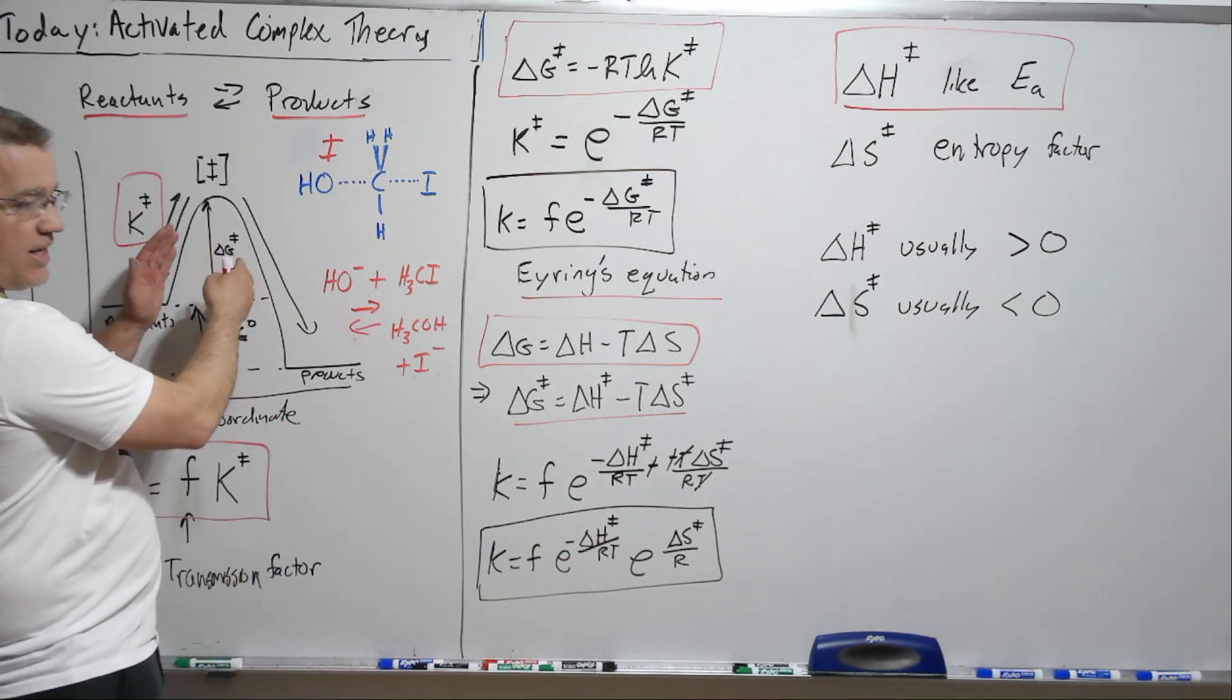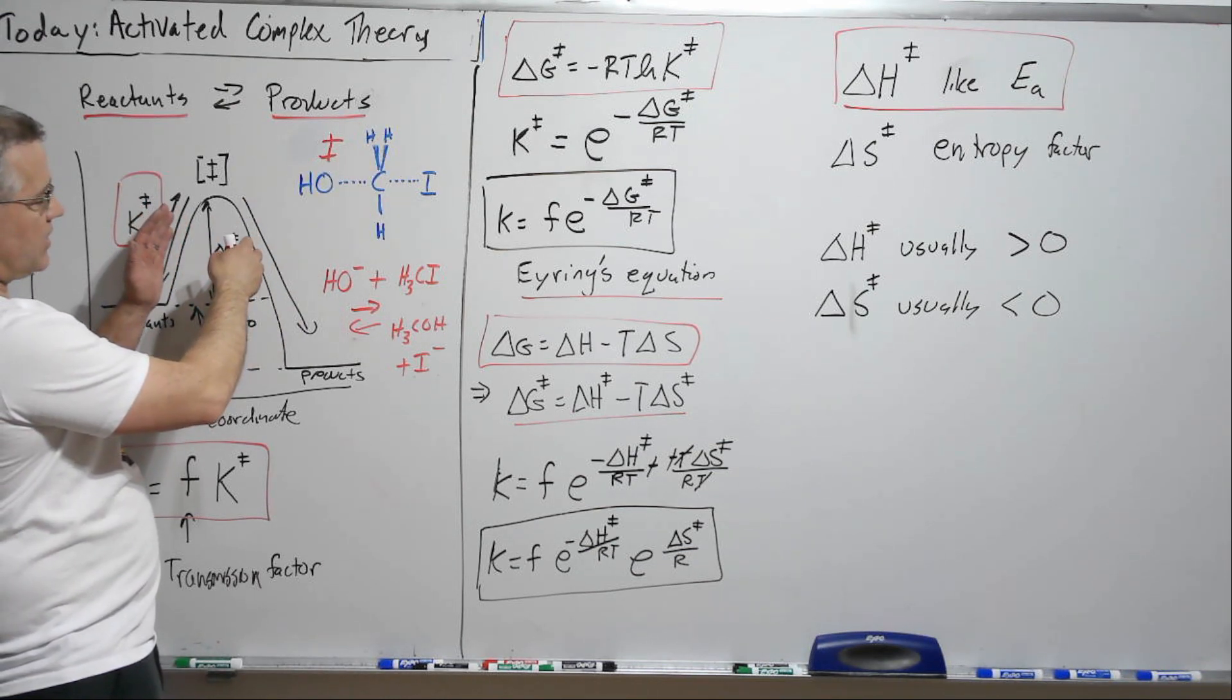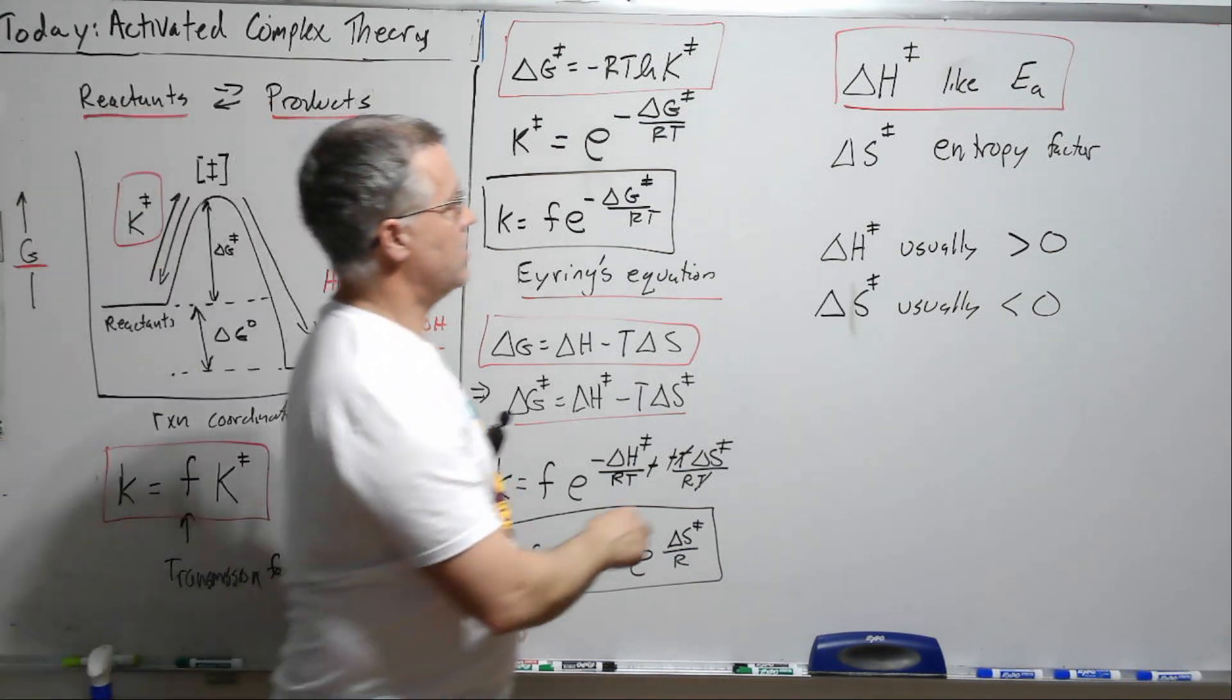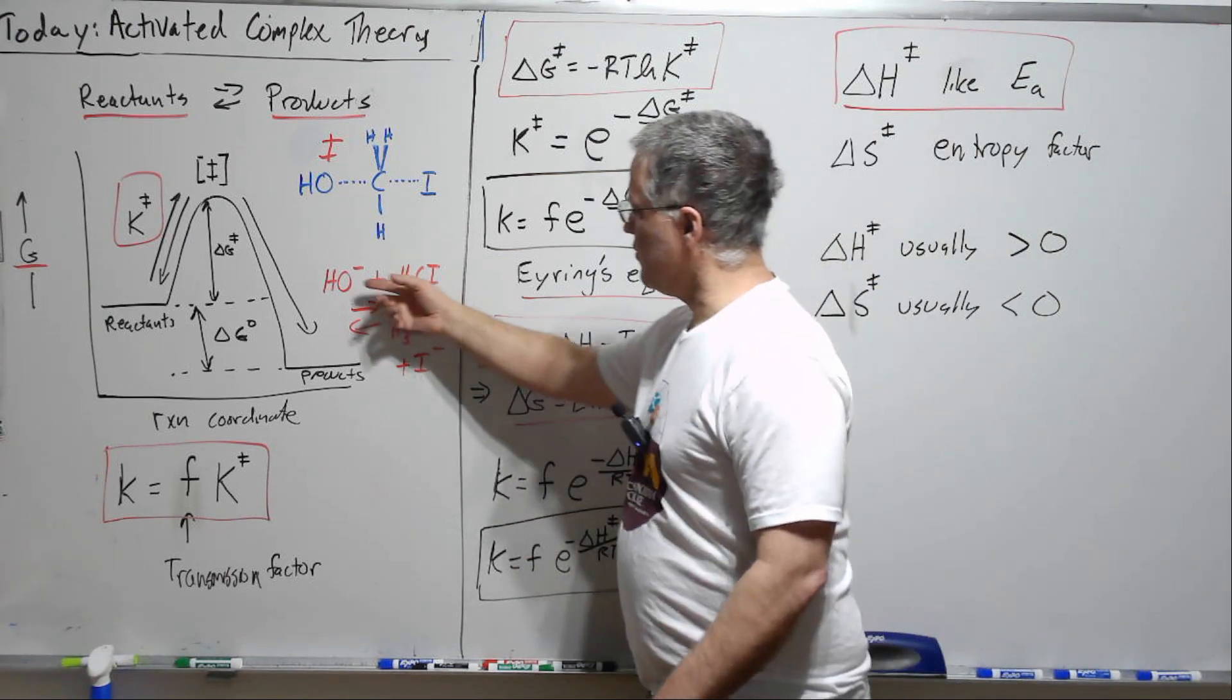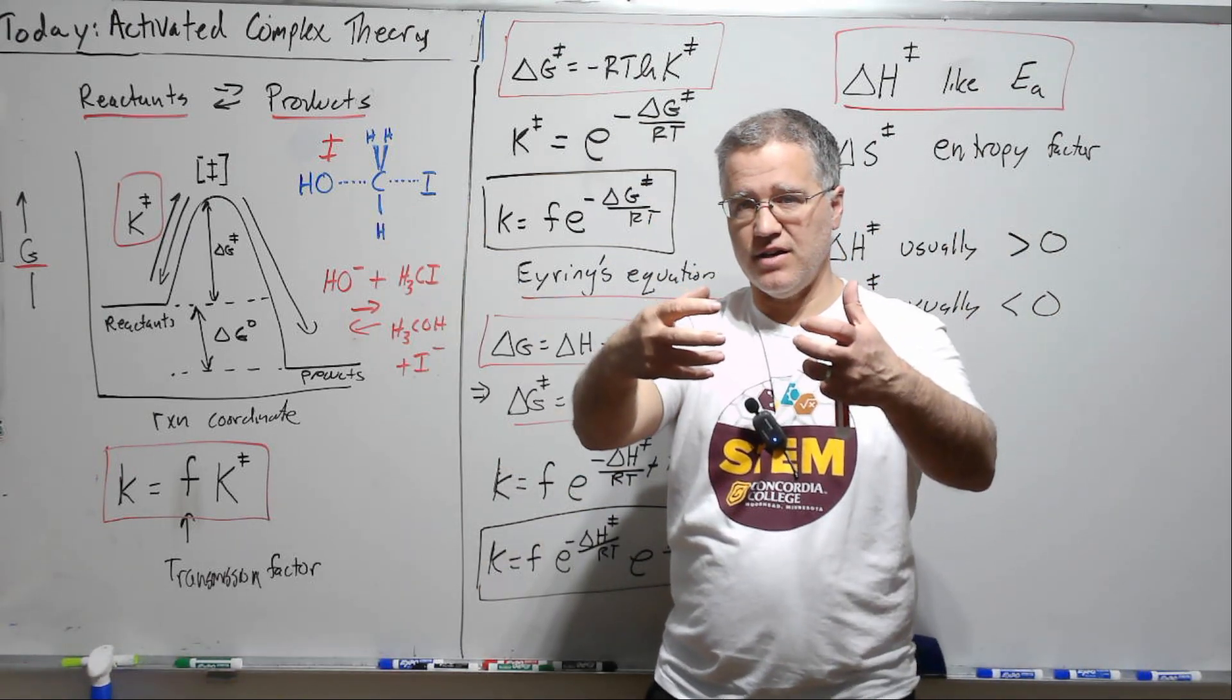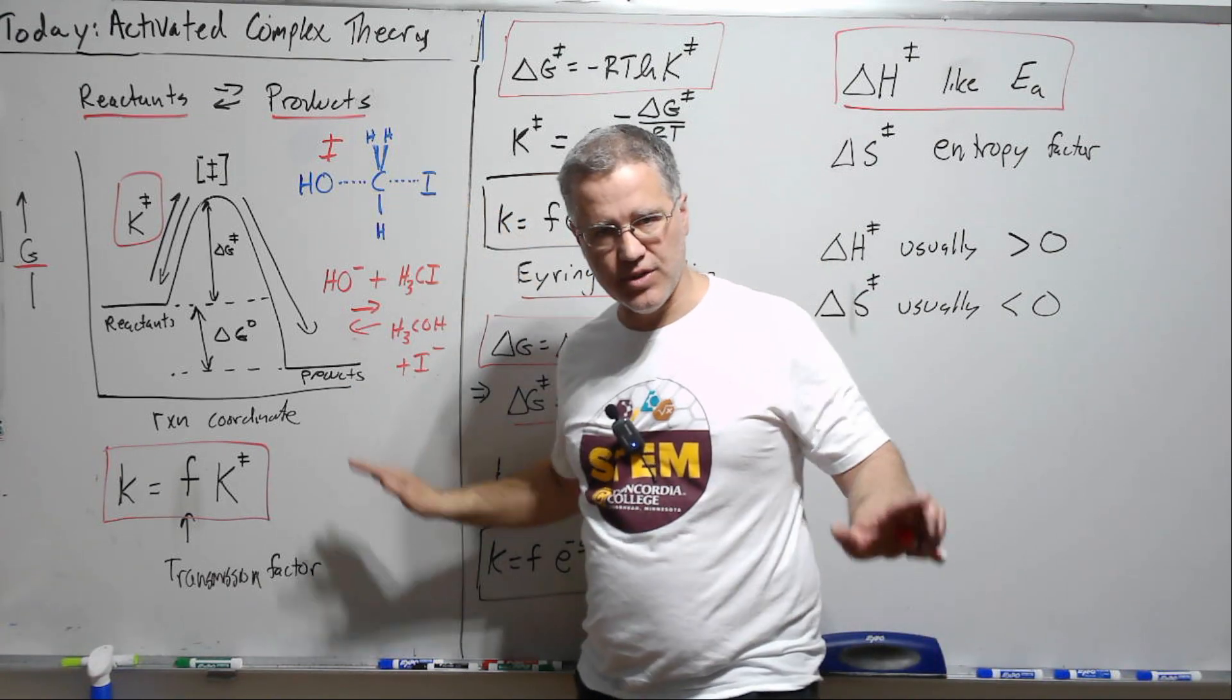Now delta H isn't everything here. So it's not quite as simple as the Arrhenius equation which would just have an energy of activation. There's an entropy factor here. And what is the entropy factor? Well here we have two things and now they're come together as one. And so we would see that this is a more ordered state than this. And nothing to do with energy here, but just an entropy factor.